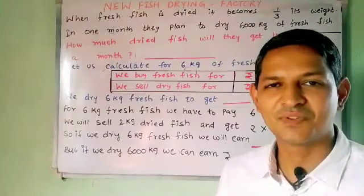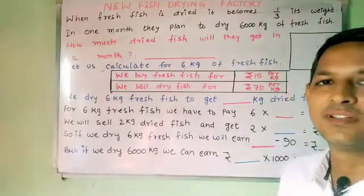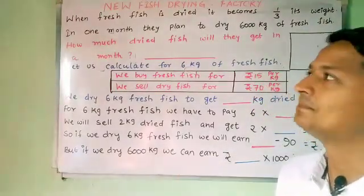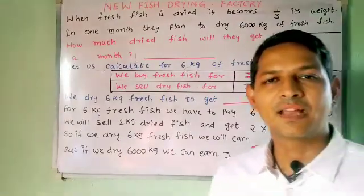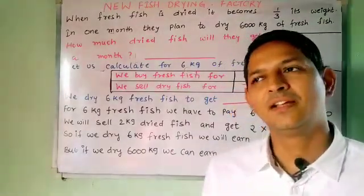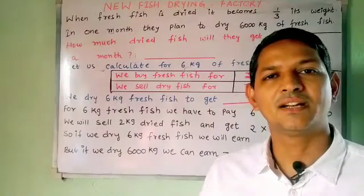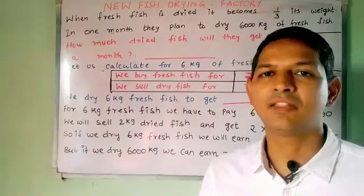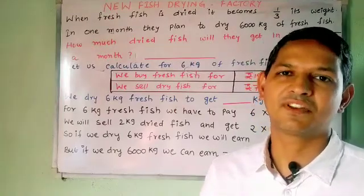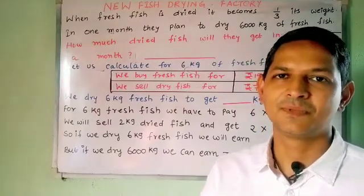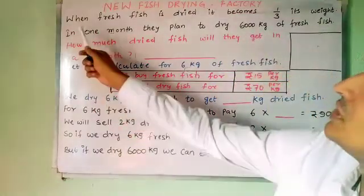Hi children. In this video let us try to understand about this problem. So how the fishermen catch the fish and after drying they sell it, which is called dried fish. And when they catch it, what is that fish called? That is fresh fish. So let us see how the problem goes.